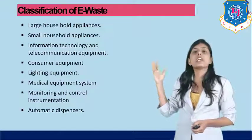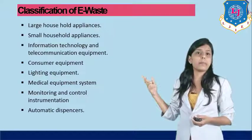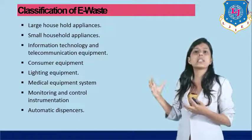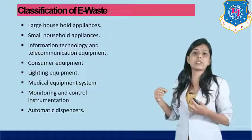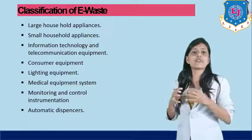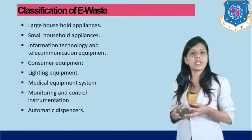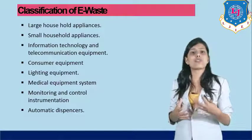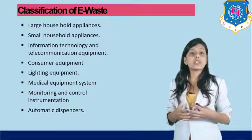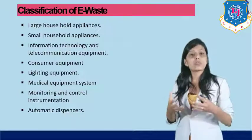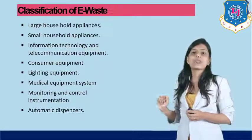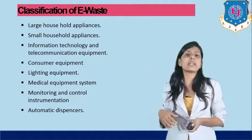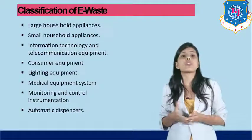Mobile phones, information technology and telecommunication equipment — for example, computers — are a part of electronic waste. Consumer equipment, lighting equipment, and medical equipment systems are also included. So anything which contains electronic components is known as electronic waste. Industries throwing components into the environment also constitutes electronic waste, including monitoring and control instrumentation and automatic dispensers, since they all consist of electronic components.